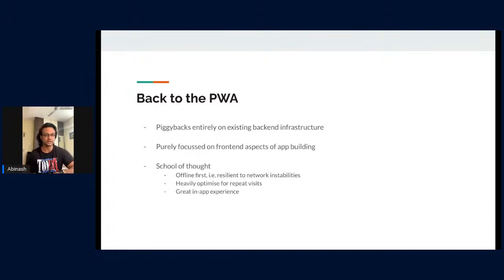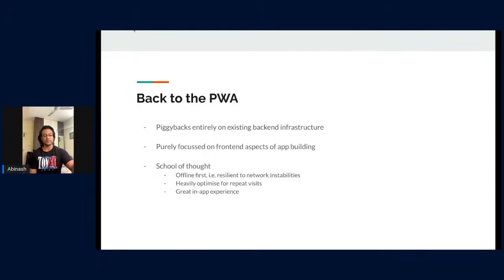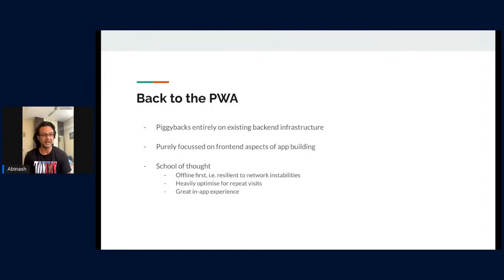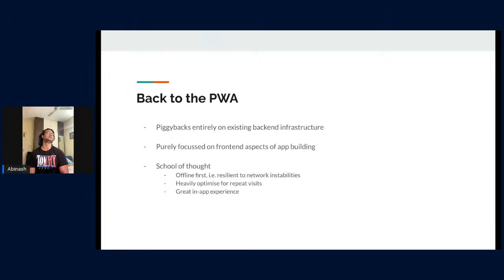Once we started building the micro-frontend for the PWA, we had to ask: what do we want the user to experience? There are a few important things. First is offline-first — technically in 2022 no one is truly offline, but we mean being resilient to network instabilities so the application doesn't break. After Reliance Jio, 4G penetration in India has grown significantly, but even in 2020–2021 around 70% of smartphones sold in India were still budget devices.